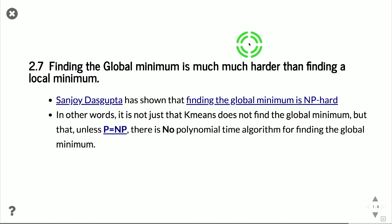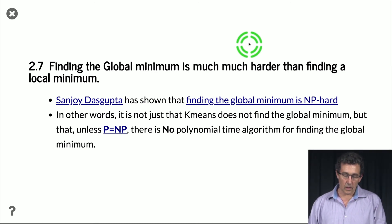So wouldn't it be nice if we could have an algorithm that converges to the global minimum? The news on that front are pretty grim because what has been shown by Shandor Dasgupta a few years ago is that the problem of finding the global minima for even two means, just k equal 2, is NP-hard. So for those of you that don't know what NP-hard means, it basically means that if we could do this problem efficiently in polynomial time, then we could do a whole slew of problems for which we don't know of a polynomial time algorithm.